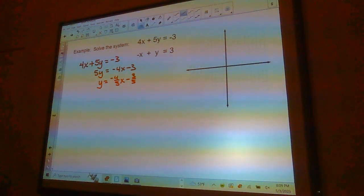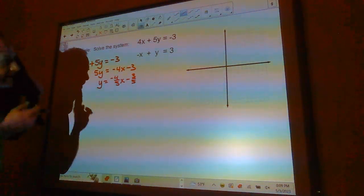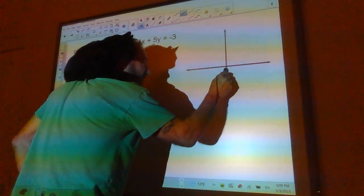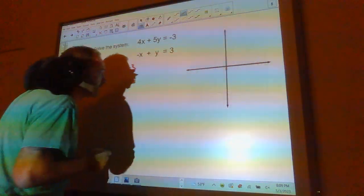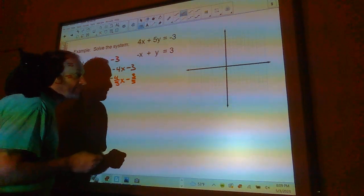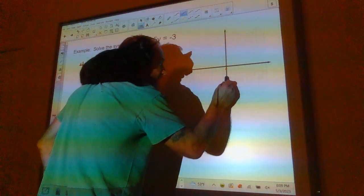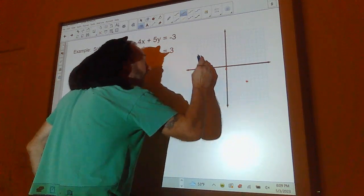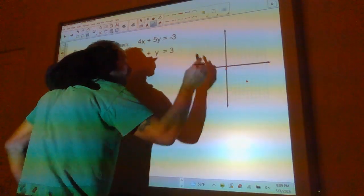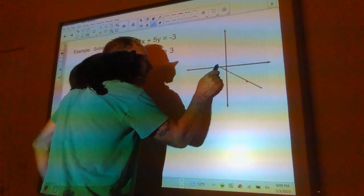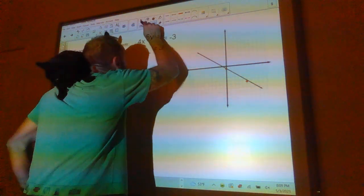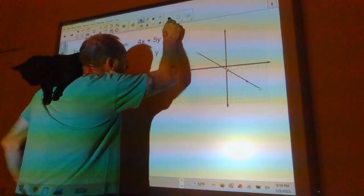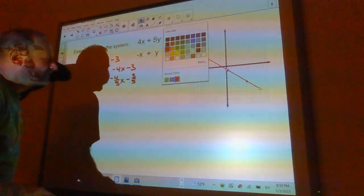So it looks like Luna the math cat has decided to come by and stop in for a view here. So negative 3 fifths is going to be right about here. And the slope is going to be negative 4 fifths. So it's down 4: 1, 2, 3, 4 to the right 5. It's going to be right about there. How do you like my line, Luna? Not so much. So there's my first line.